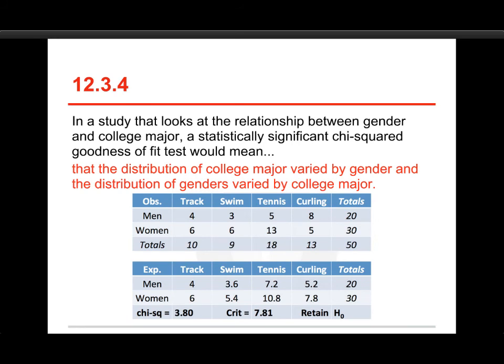Again, here's the same example where we're looking at gender, and we're looking at sports, two categorical variables, and this is where we would use, if we had a statistically significant finding, we don't here, we would see more substantial differences between sports.